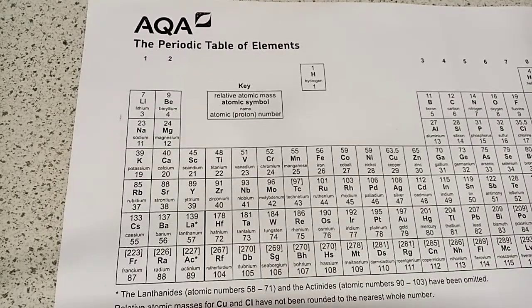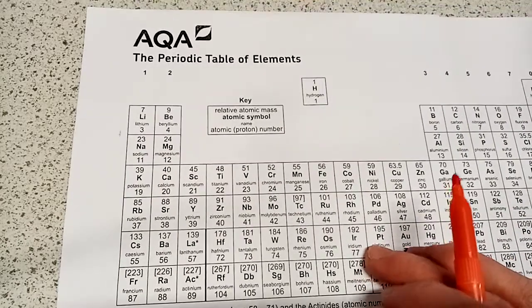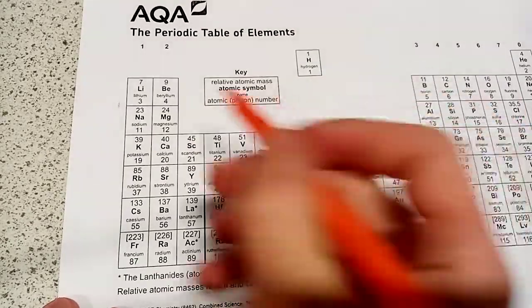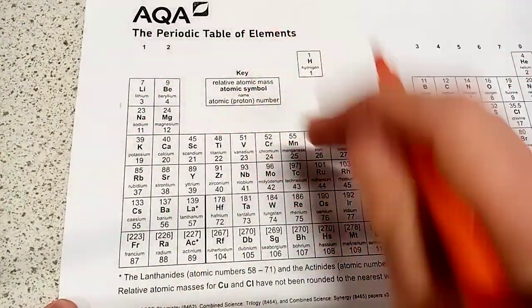Now as we all know, the periodic table took a long time to develop into what we have today. However, the modern periodic table is arranged into groups and periods. Let's talk about groups first of all.